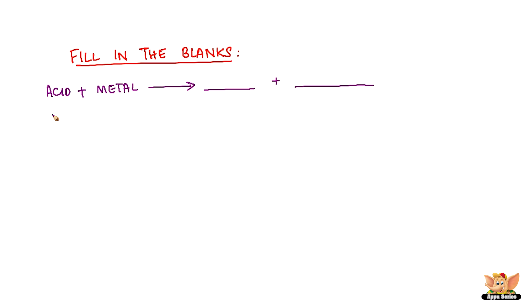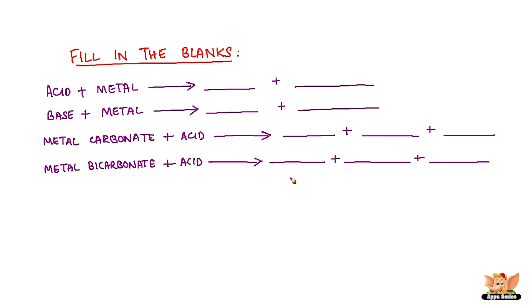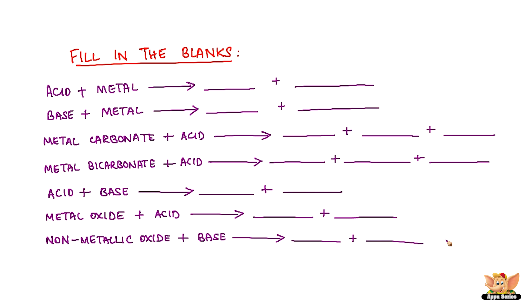Acid plus metal gives dash plus dash. Base plus metal gives dash plus dash. Metal carbonate plus acid gives dash plus dash plus dash. Acid plus base gives dash and dash. Metal oxide plus acid gives dash plus dash. Non-metallic oxide plus base gives dash plus dash.